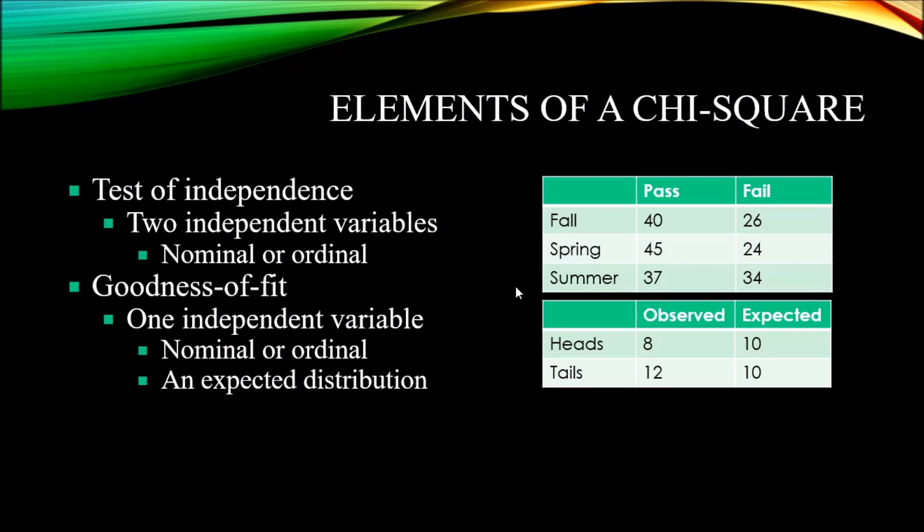They are nominal variables. You can't order the three semesters—they're nominal, name only. We have the same situation with the other independent variable here, the pass and fail, the outcome variable. Pass and fail are at the nominal level of measurement. You can't put one before the other.